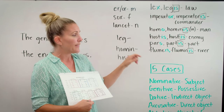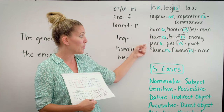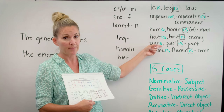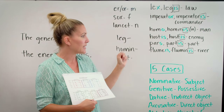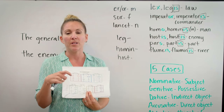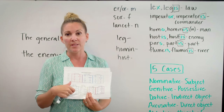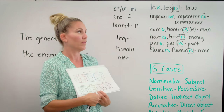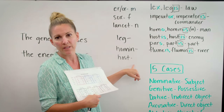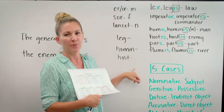...or if the nominative singular ends in a double consonant — like 'pars, partis,' where the nominative singular ends in RS — then if you need the genitive plural form, you would use IUM instead of UM. So it would be 'hostium,' not 'hostum,' and 'partium,' not 'partum.'